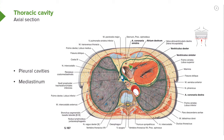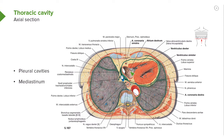Here we can see the pericardium of the heart in green. We can see the heart muscle itself. The portion outlined here is your left ventricle. The heart and its pericardium lie within the mediastinum.